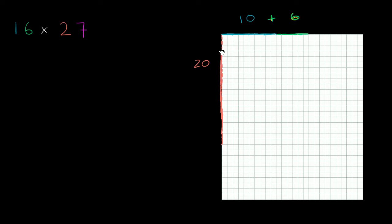But we're not just talking about 20, we're talking about 27. So it's 20 plus 7. So let's count off 7 here: 1, 2, 3, 4, 5, 6, 7.